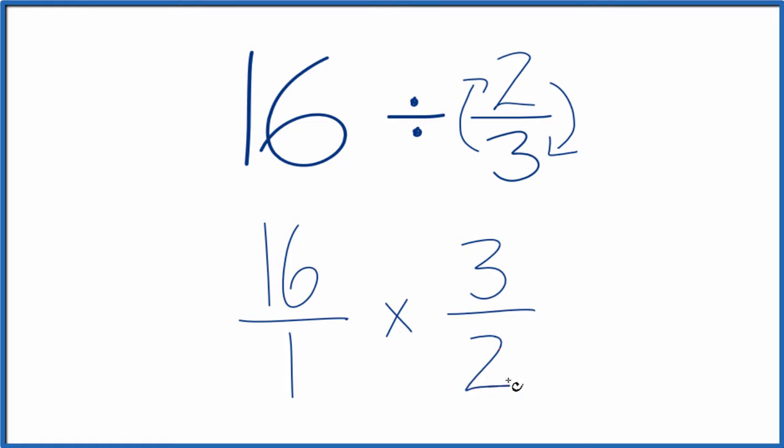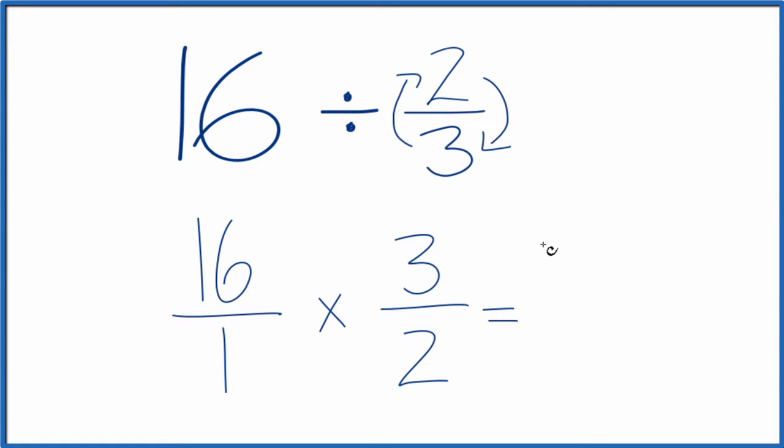So when we multiply these fractions together now, we're going to multiply the numerators and then the denominators. That'll give us our answer. 16 times 3 is 48, and then 1 times 2 is 2.